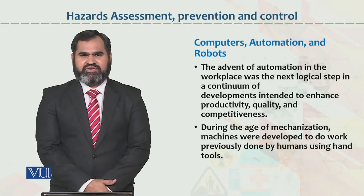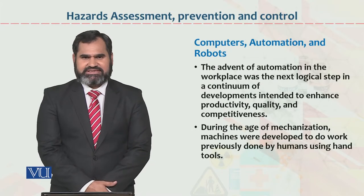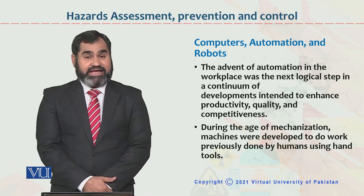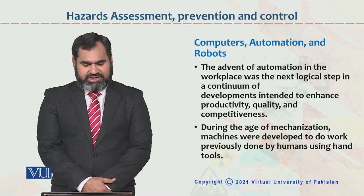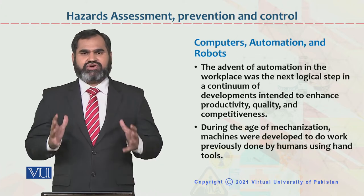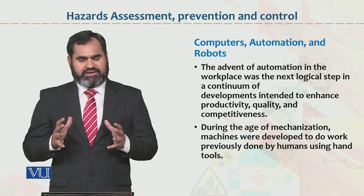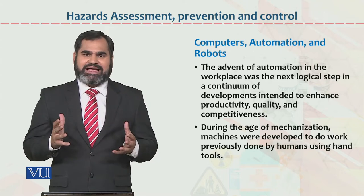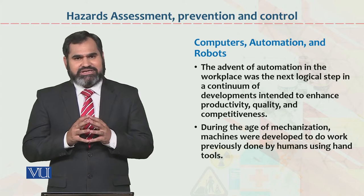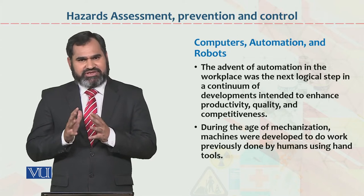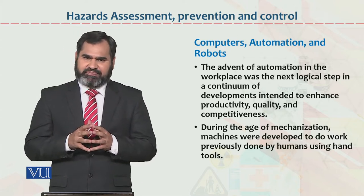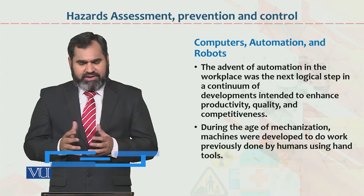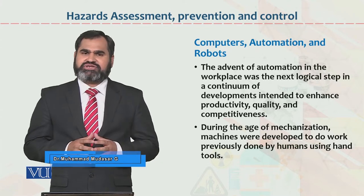Dear students, the topic which we are going to discuss is Hazard Assessment, Prevention and Control with relevance to Computers, Automation, and Robots. These are three topics. Computer — you know that this is a technology where information and technology are both combined. Information is given to us and the technology is used. Automation is used and the Robot system is used.